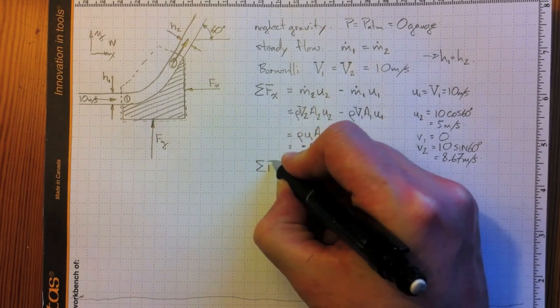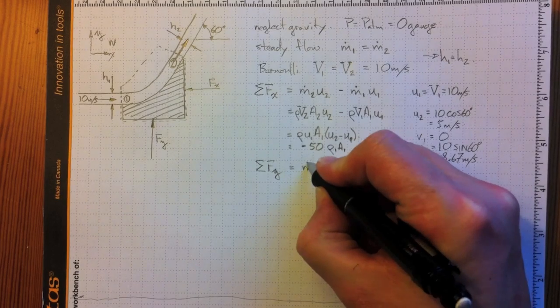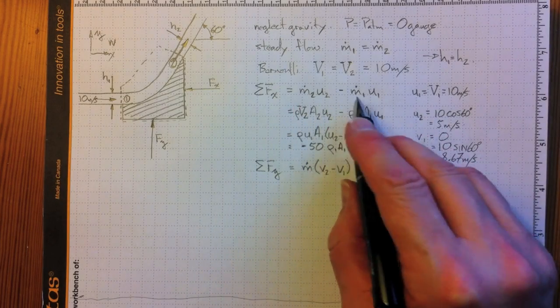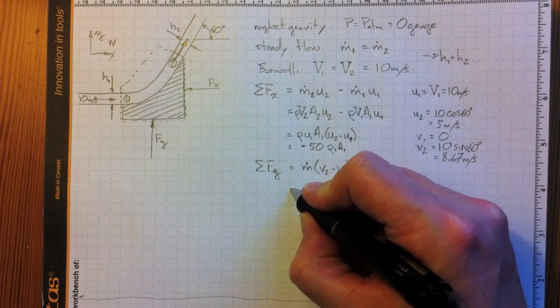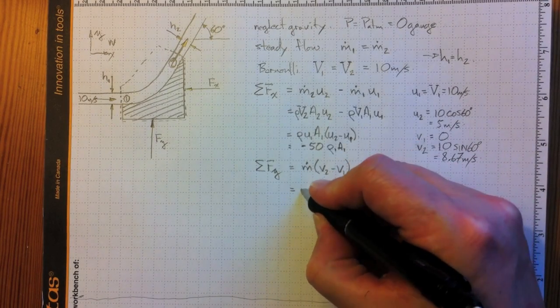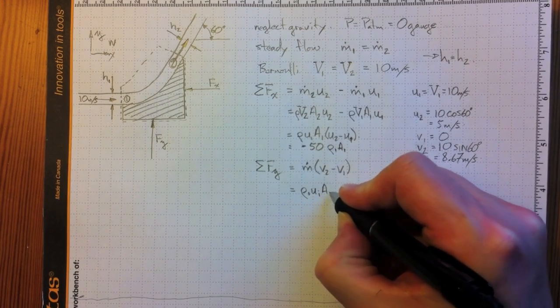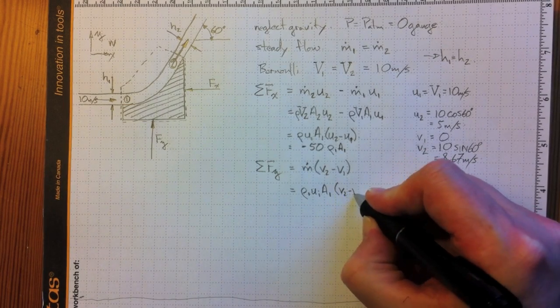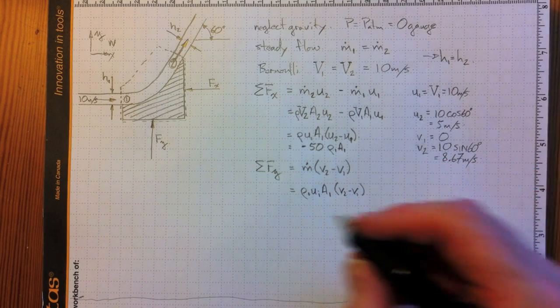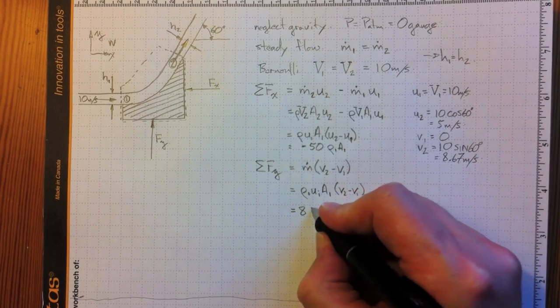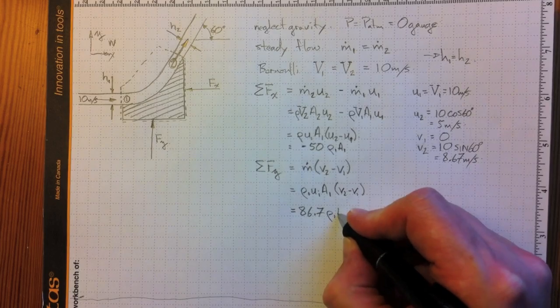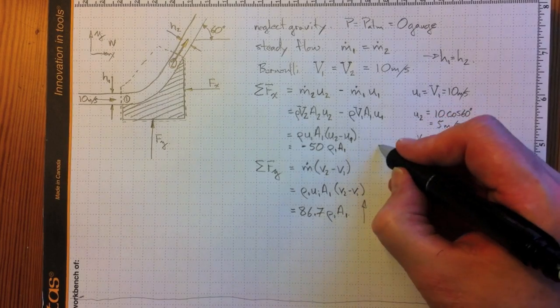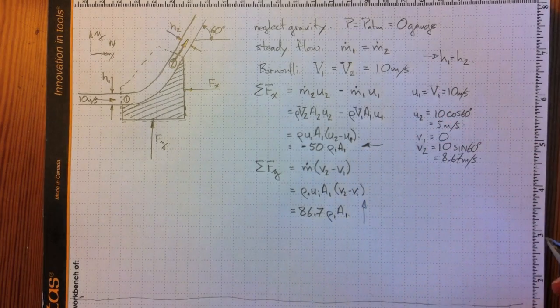Similarly, we can figure out what's going on for the sum of the forces in the y direction. It'll be m-dot times v2 minus v1. The m-dot is the same in both cases. We make sure it's the same in both cases by checking on it. And, we wind up with rho1, u1, a1, times v2 minus v1. V1 is 0, v2 is 8.67, and this turns out to be 86.7 times rho1, a1, will give us the force in the y direction. So, it's positive, it's acting that way. This one was negative, it's acting that way. This one was negative.